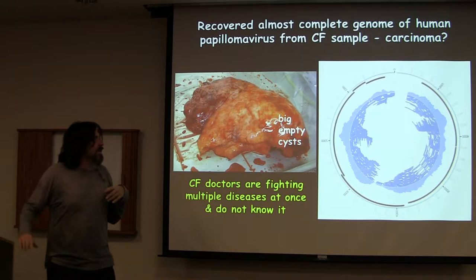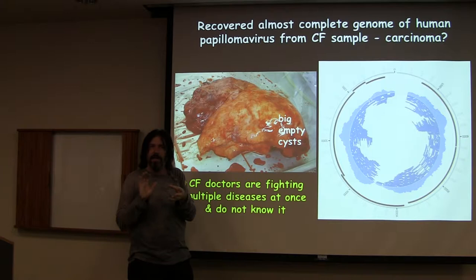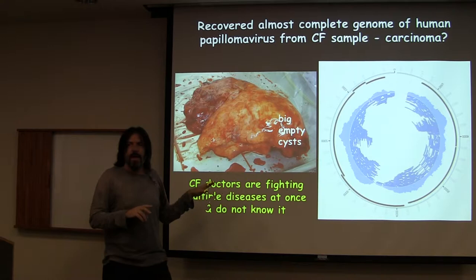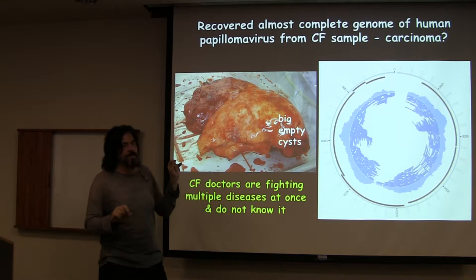This is the last example: we also see things like these cysts in one lobe, and that was probably because there was actually a carcinoma going on — and of course they don't really know that when they're doing the treatments. So this person had CF and probably lung cancer, and you can see that in the genes. So when you're a CF doctor, it's like you're treating a whole bunch of problems, just trying to keep these people alive. There's a whole bunch of stuff happening in those lungs, and this could just be a papillomavirus.